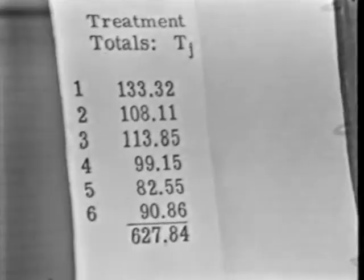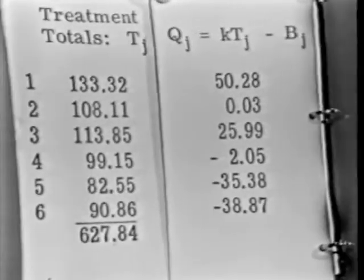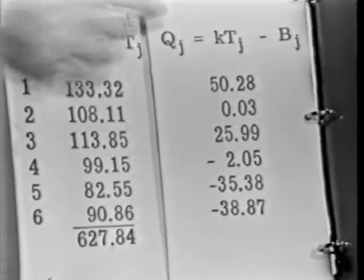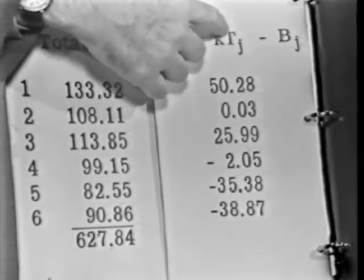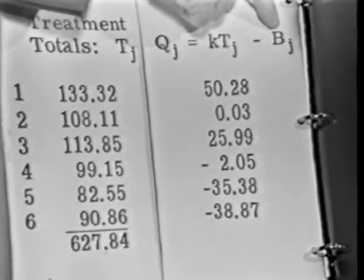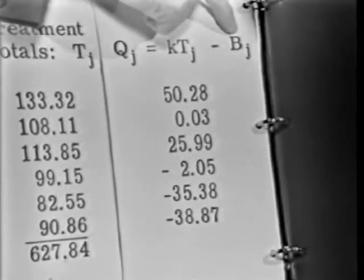To do the calculation of the adjusted treatment averages, what you have to do is work up these finagle factors, Q sub j. Now, Q sub j is the k from the sentence times the treatment totals minus B sub j. And B sub j turns out to be the totals of the blocks which contain treatment j, the totals of the blocks which contain treatment j.